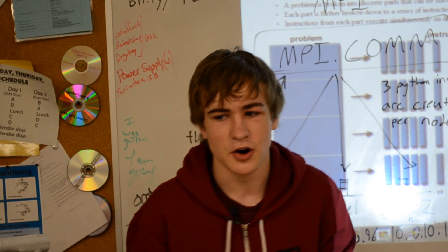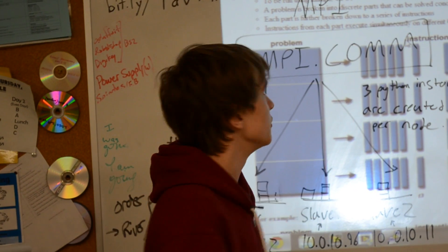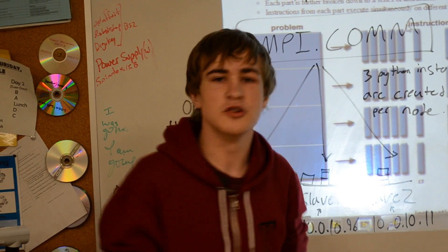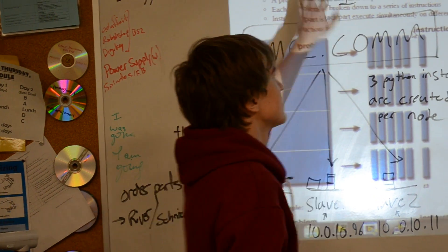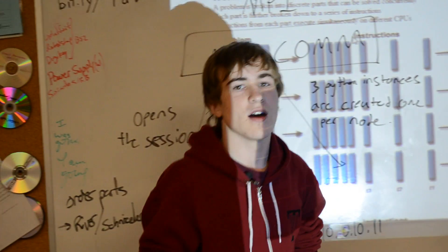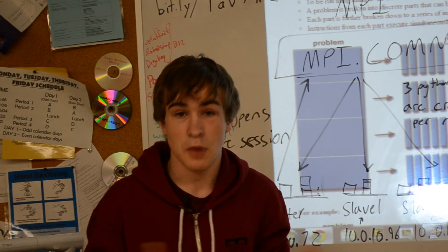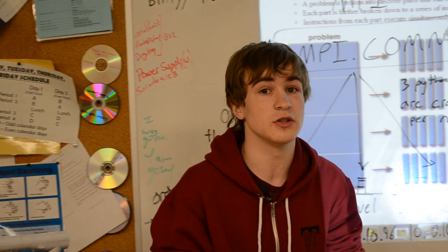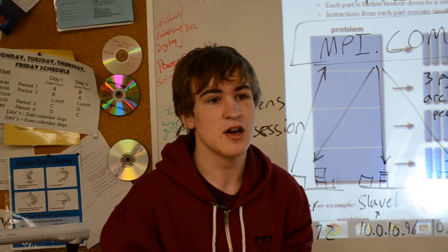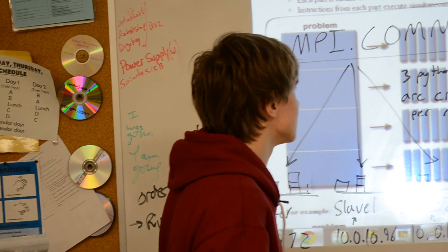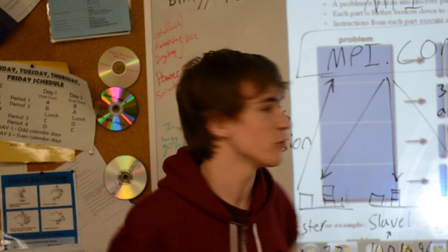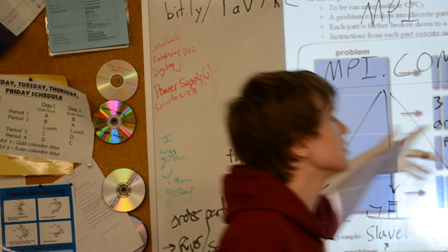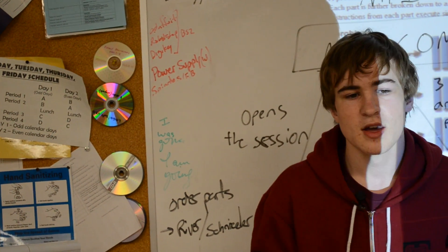So, the base principle with any computing is you take the problem and you split it up into a set of instructions that are fed to the CPU. Now, in multiprocessing or parallel processing, most of our computers already do a form of parallel processing and how it works is you have the shared memory of the problem and each CPU takes a portion of the problem.